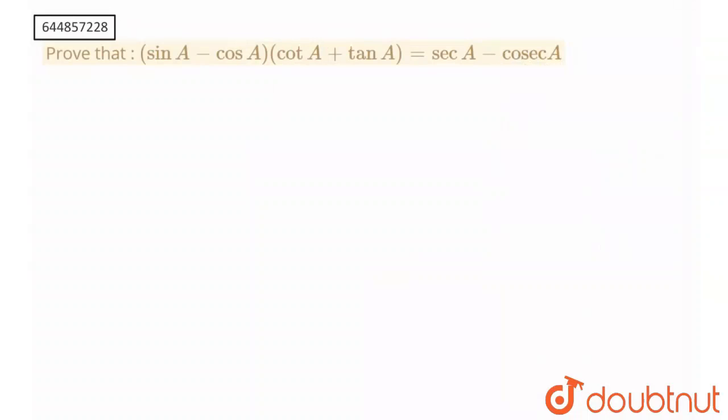That sin A minus cos A multiply by cot A plus tan A is equal to sec A minus cosec A. So for solving this, I will take my LHS term which is sin A minus cos A multiply by cot A plus tan A.